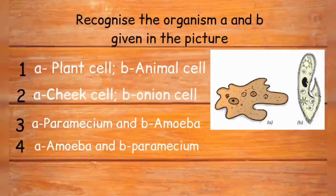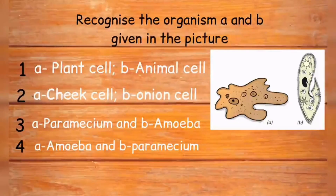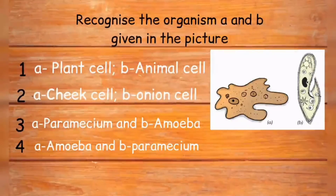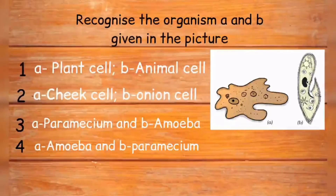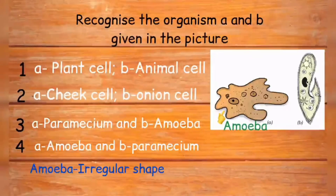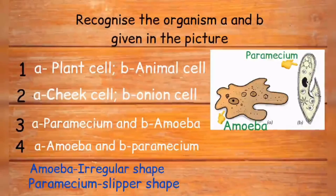Recognize the organisms A and B given in the picture. Options are: A is plant cell and B is animal cell; A is cheek cell and B is onion cell; A is paramecium and B is amoeba; or A is amoeba and B is paramecium. Organism A has an irregular shape while organism B resembles a slipper. Organism A is amoeba, known for its irregular shape, while organism B is paramecium, famous for its slipper-like shape. The correct answer is option four.